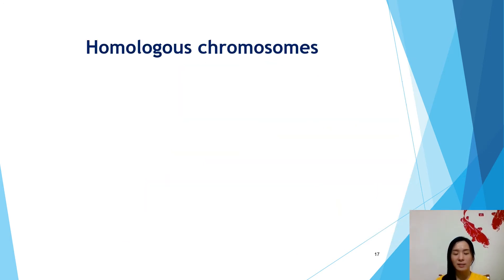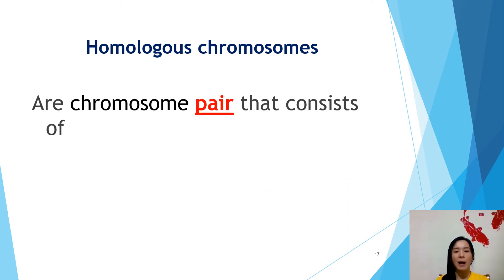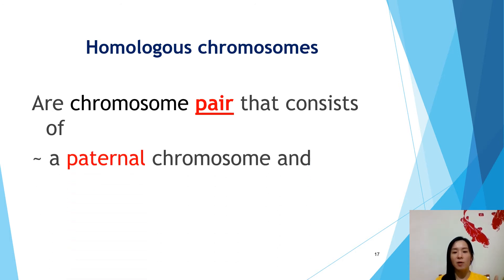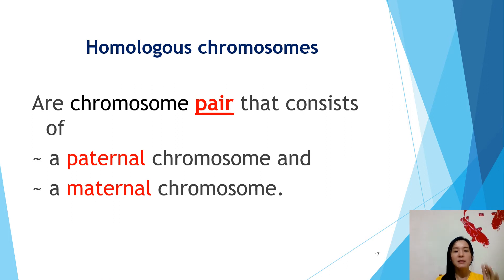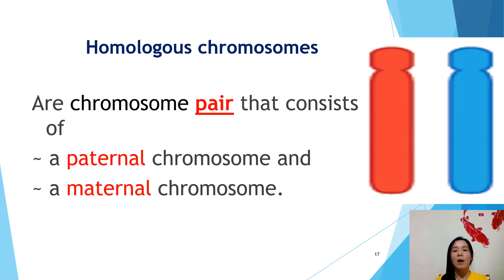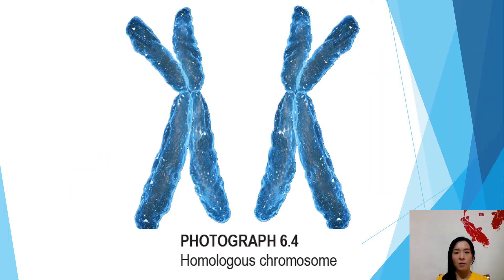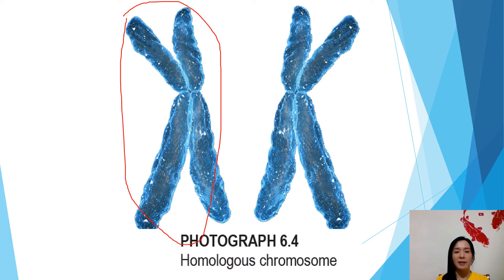We look at the homologous chromosome. Homologous chromosomes are chromosome pairs — a pair of chromosomes that consists of a paternal chromosome and a maternal chromosome. That means it is a pair made up of the chromosome from the father and the chromosome from the mother. So this is one pair of homologous chromosomes: the red color comes from the father (paternal chromosome) and the blue color comes from the mother (maternal chromosome).